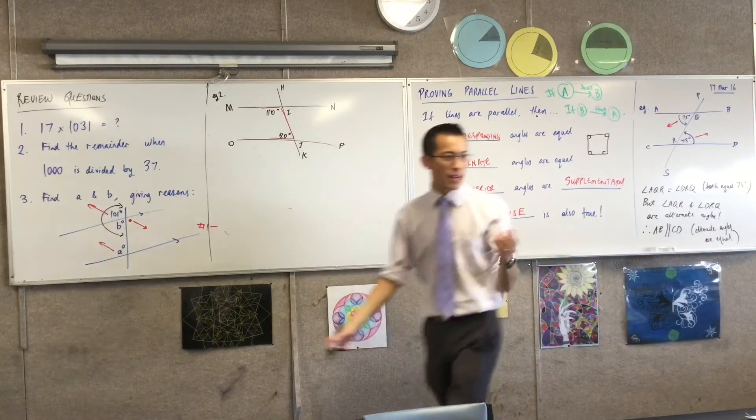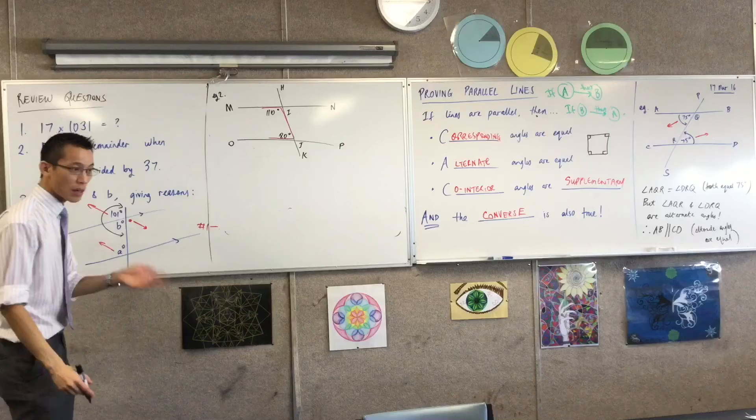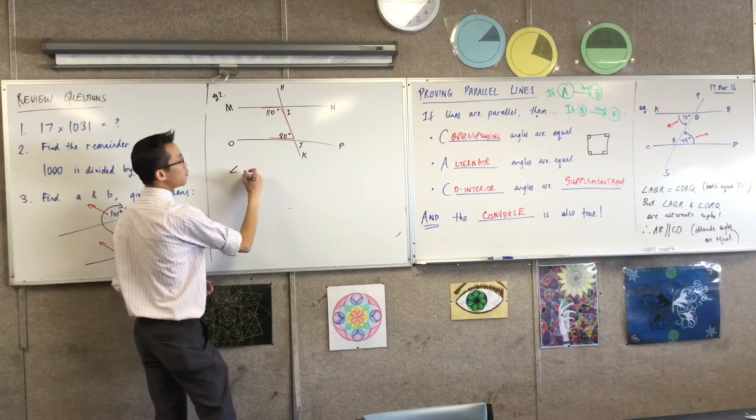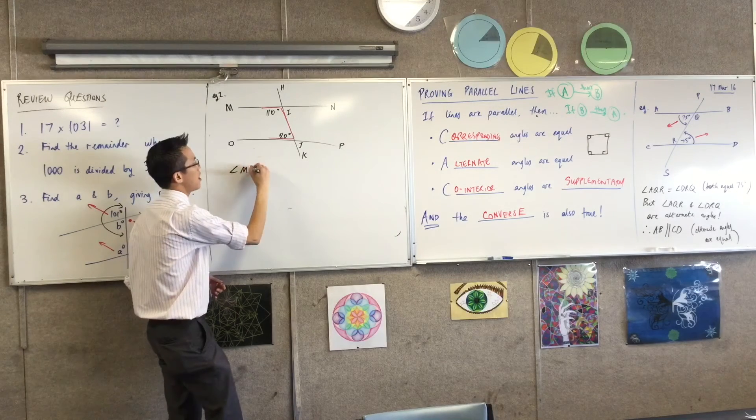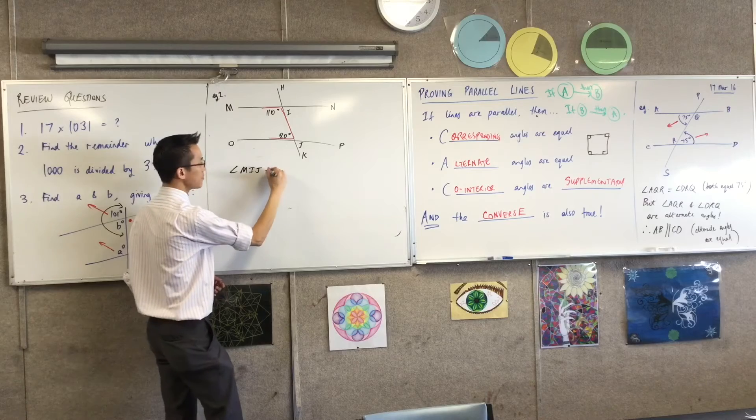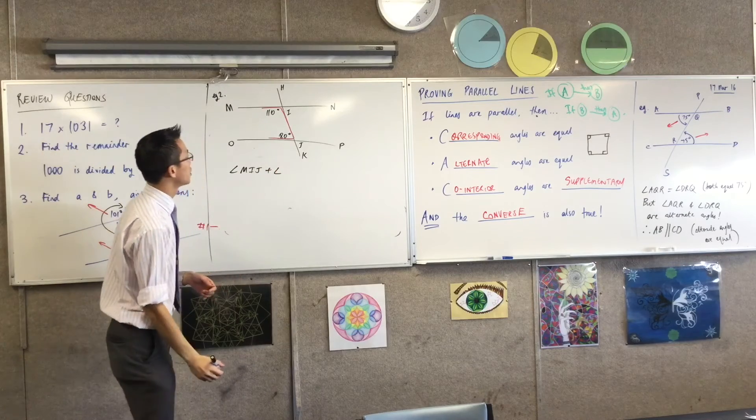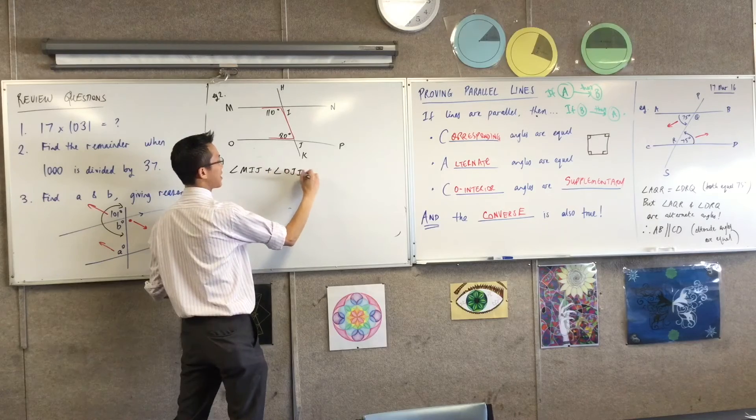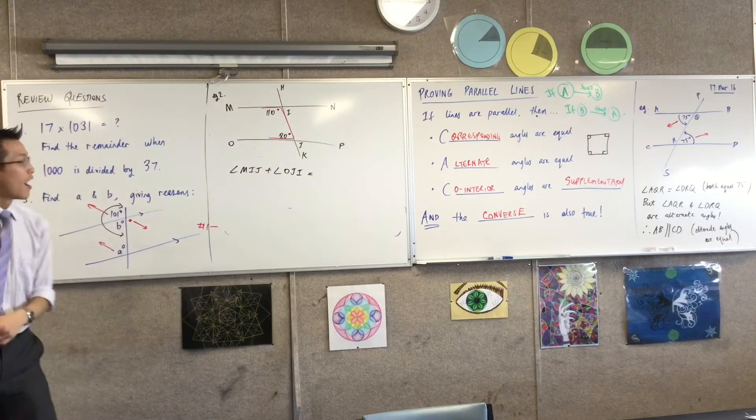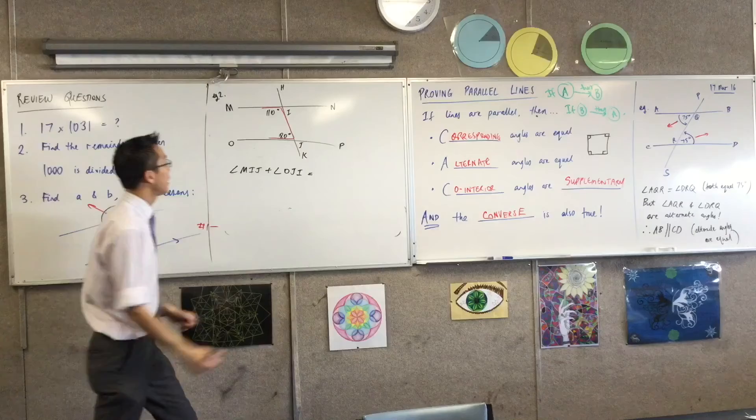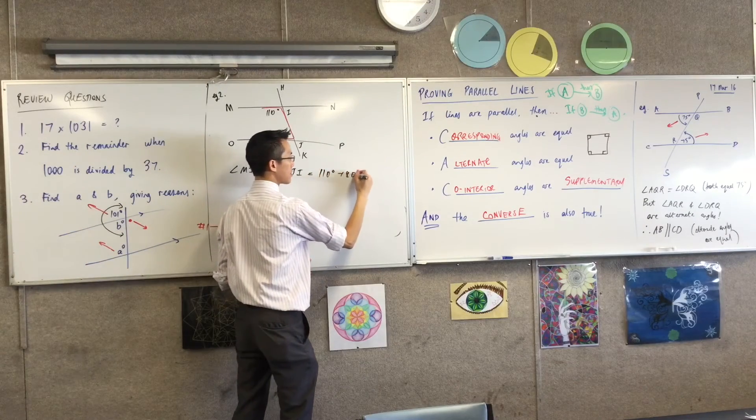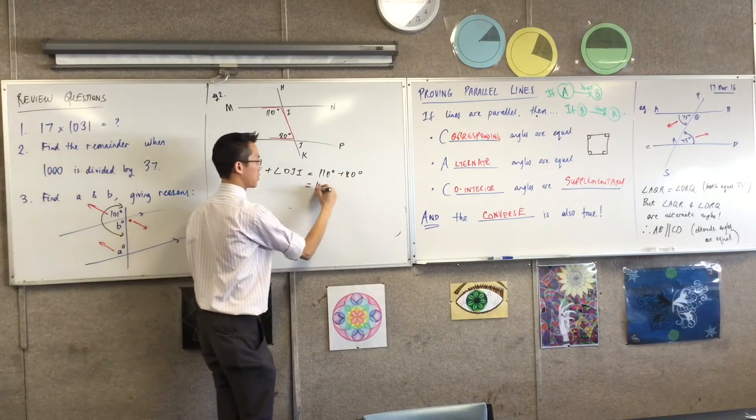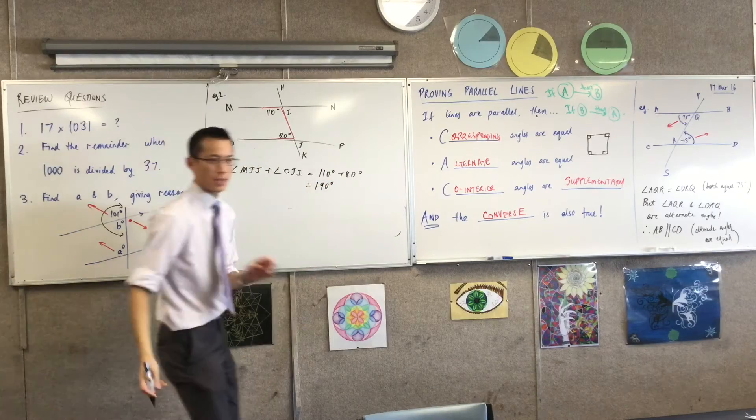Do they add up to 180? What do they add up to? They don't do that. They add up to 190. So what I'm going to say is, angle, what are our names here? M, I, J, plus angle, what do you want to call the other one? How about O, J, I, that's the smaller one in here. It's equal to 110 degrees plus 80 degrees. And like we just saw, that's 190.